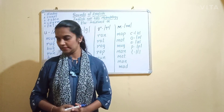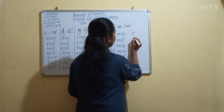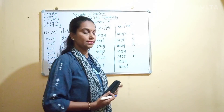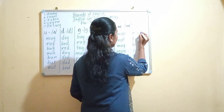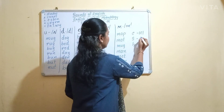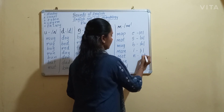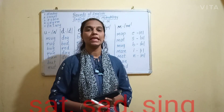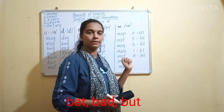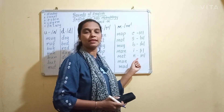You also learnt about one more cluster, that is E-S-B-I-N. Let us revise that sound also. E says A, S says S, B says B, I says E, and N says N.